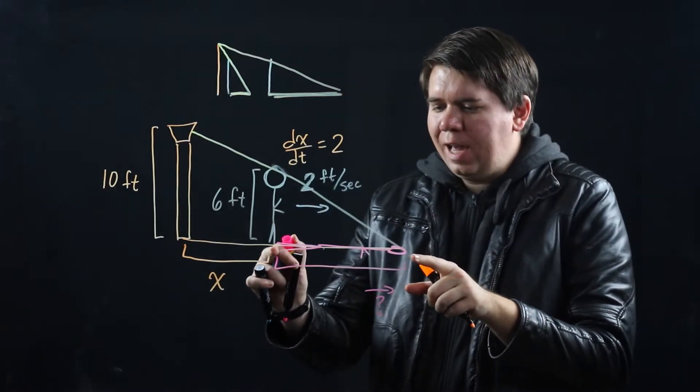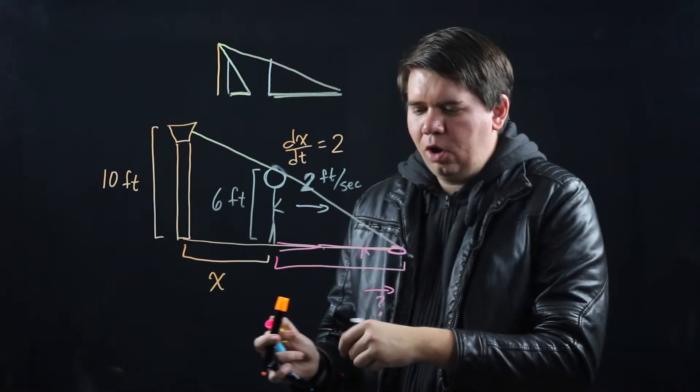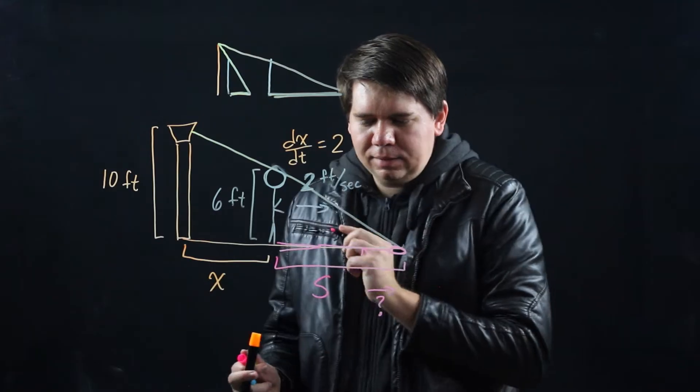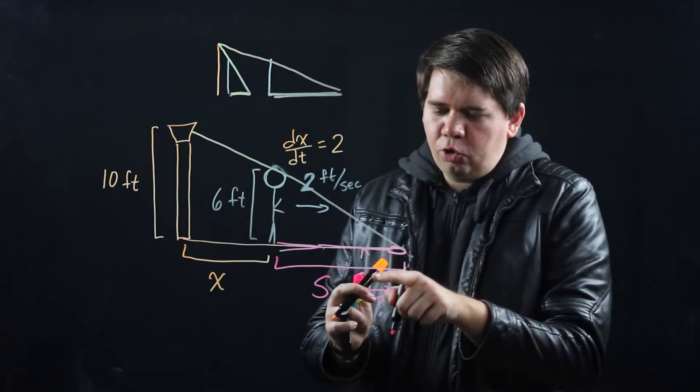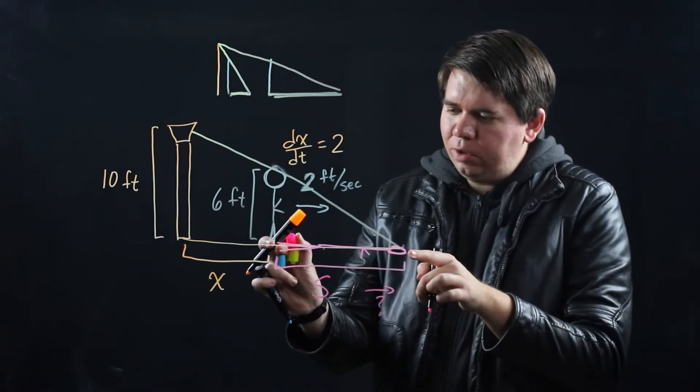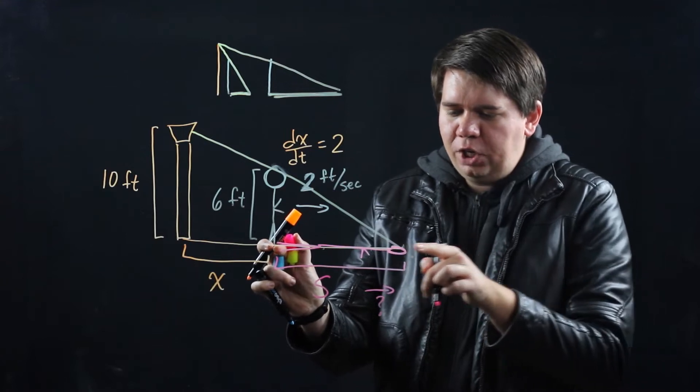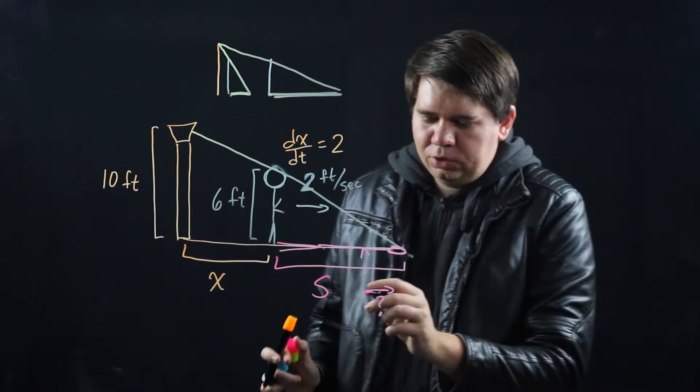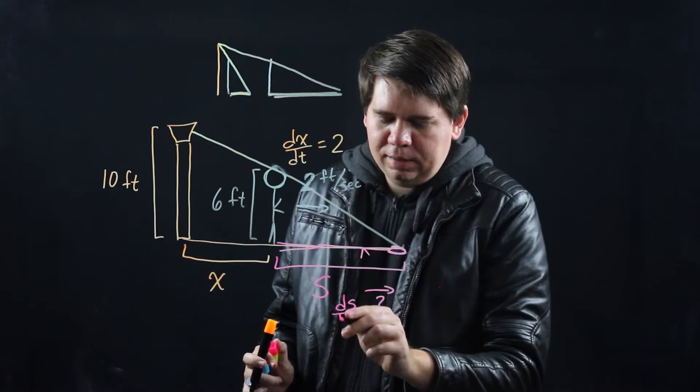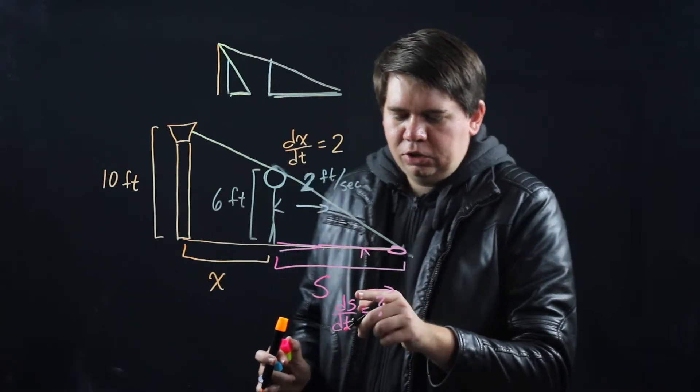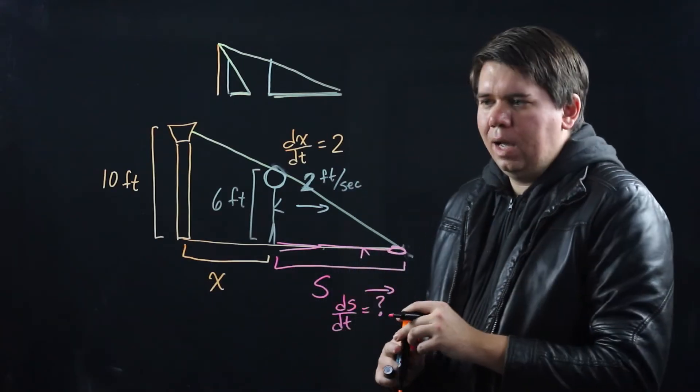Then we have this shadow length. Let's call that length s. And we want to know how quickly the shadow is growing. Well that's just asking, what is the rate of change in s? So our mystery quantity is just ds/dt, the change in s over time.